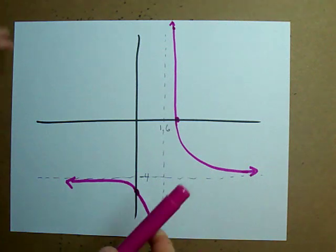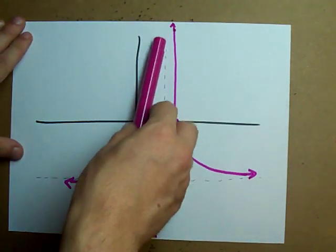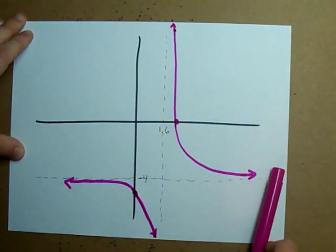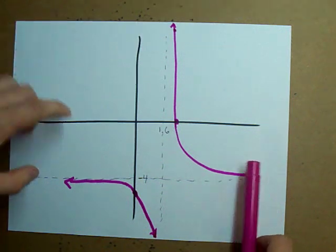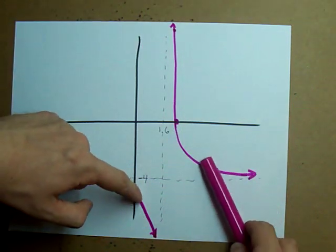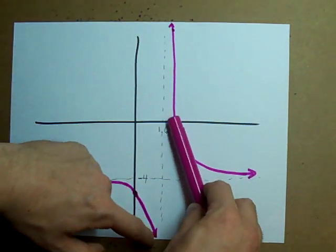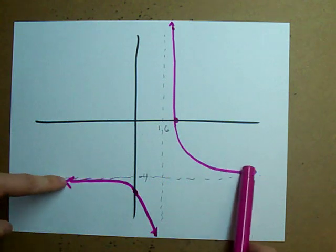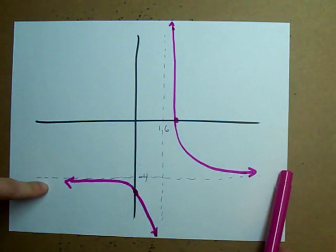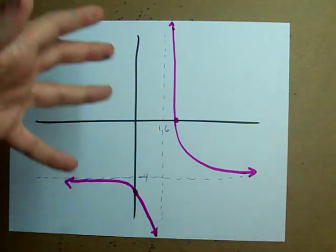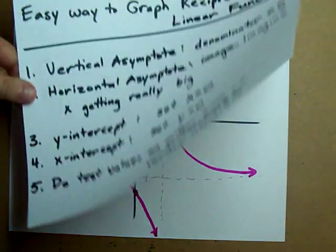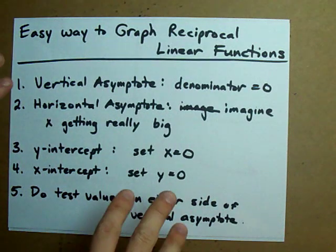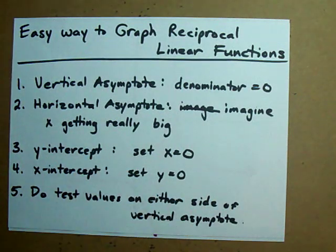Reciprocal functions always have a vertical asymptote and a horizontal asymptote, and they get closer and closer to each asymptote without actually touching it. Those are the key features, and this is the always-works way of graphing.